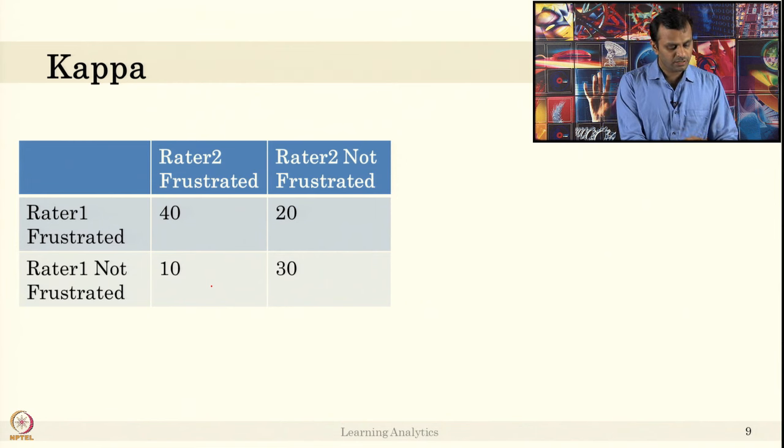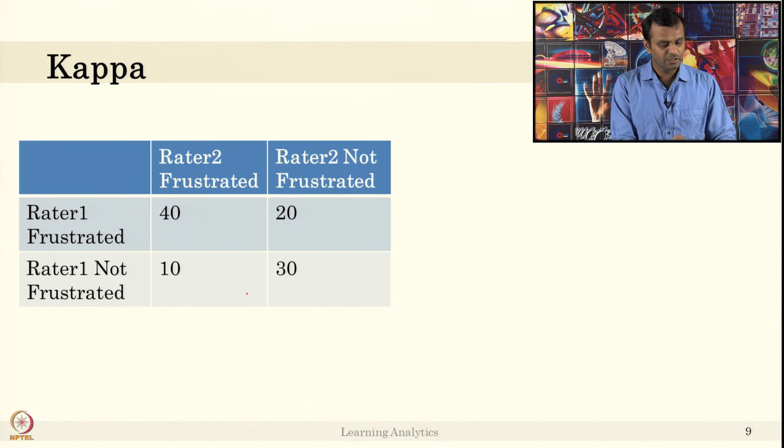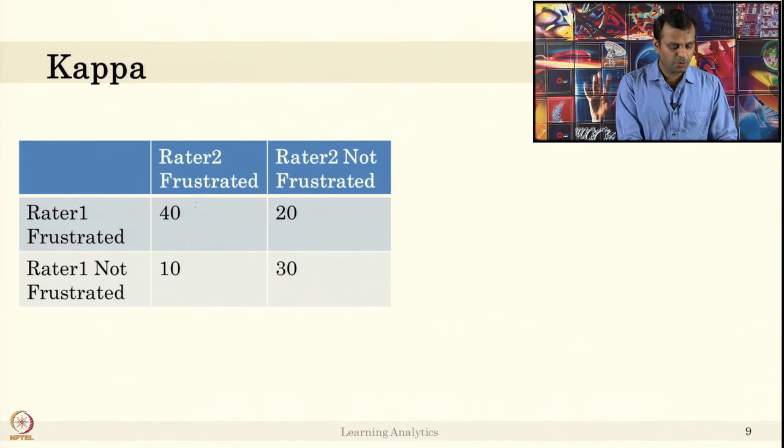Rater 1 said 40 times frustrated, same as rater 2. But rater 1 said that 20 more times students frustrated, but rater 2 did not say that. He might have said not frustrated. This is a simple confusion table, similar to what we saw in the classification problem. Rater 1 and rater 2 agree they are frustrated. Rater 1 and rater 2 not agreeing their frustration. This is the cross values, that is rater 1 not agreeing it is frustration, but rater 2 marks it as frustration. This is the wrongly classified problems. There is no agreement between these two raters. There is high agreement between these two raters.